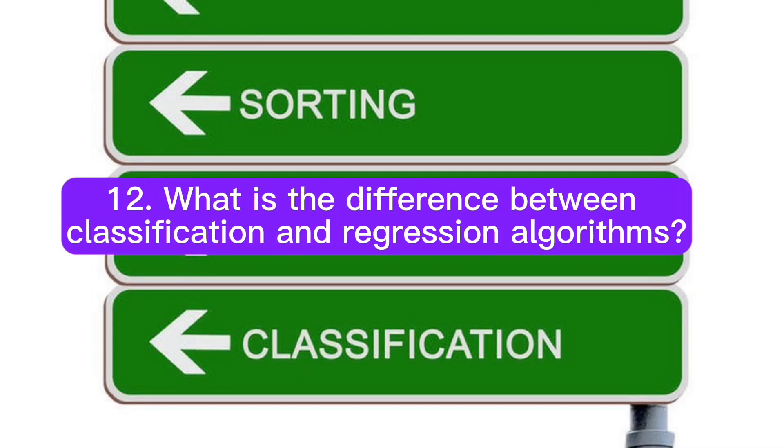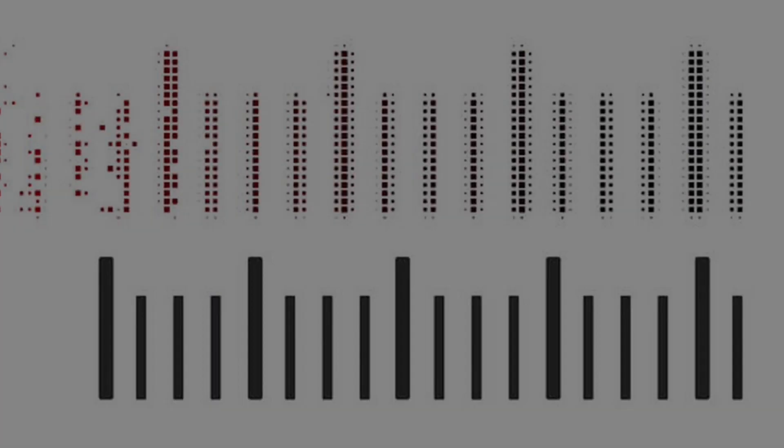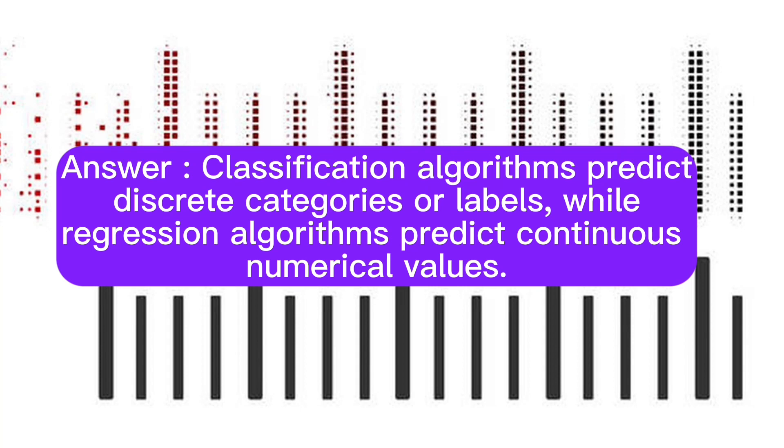Question 12: What is the difference between classification and regression algorithms? Answer: Classification algorithms predict discrete categories or labels, while regression algorithms predict continuous numerical values.